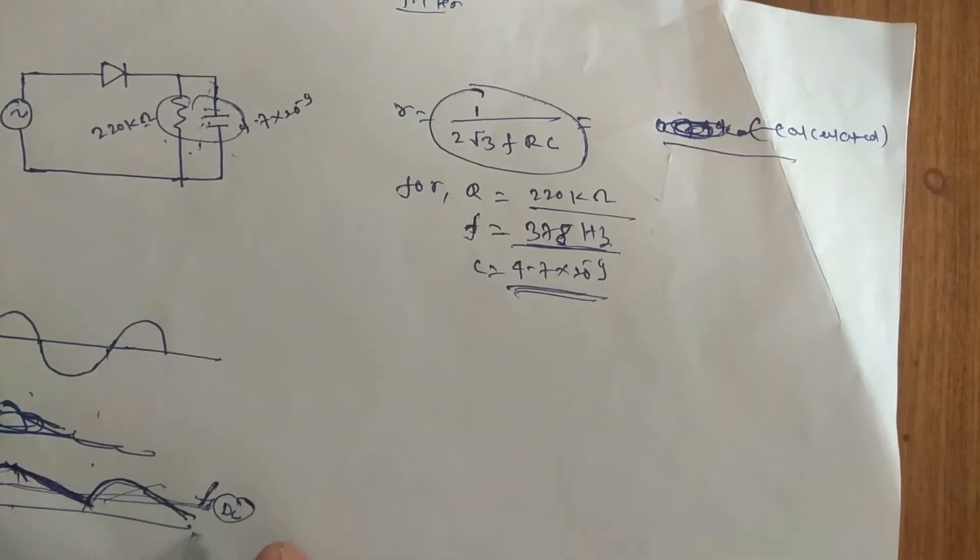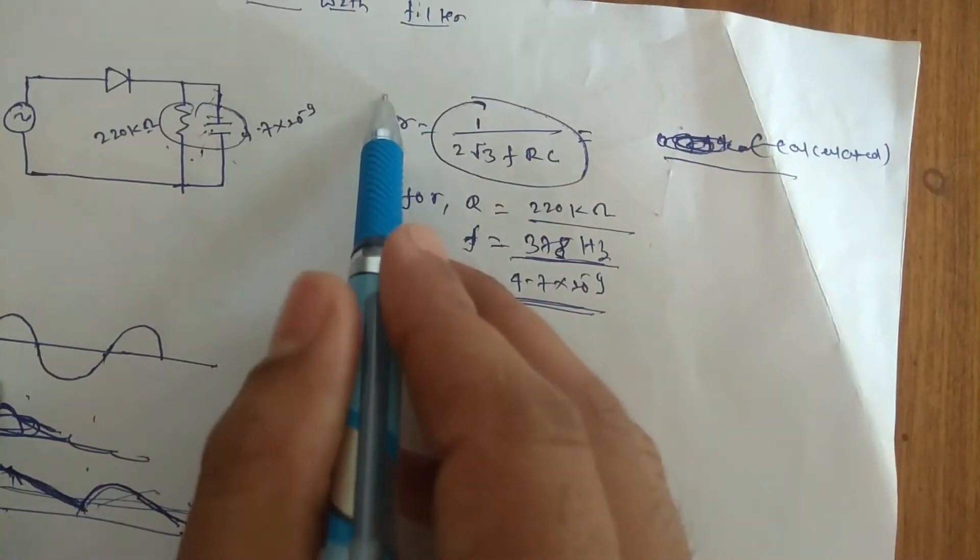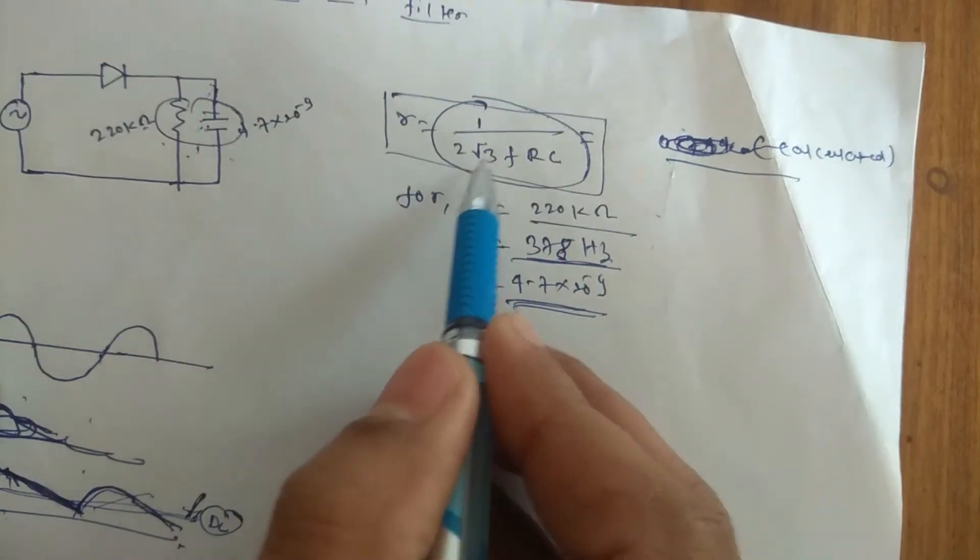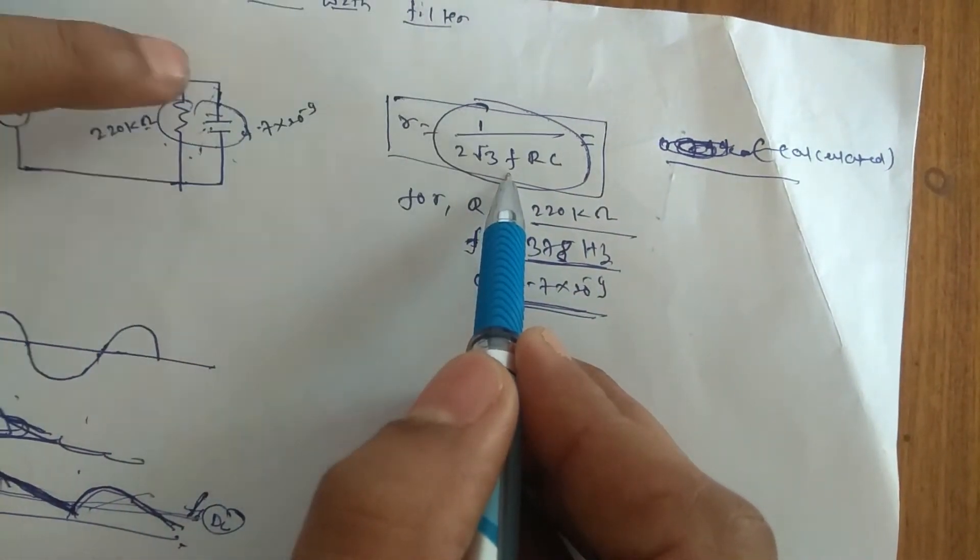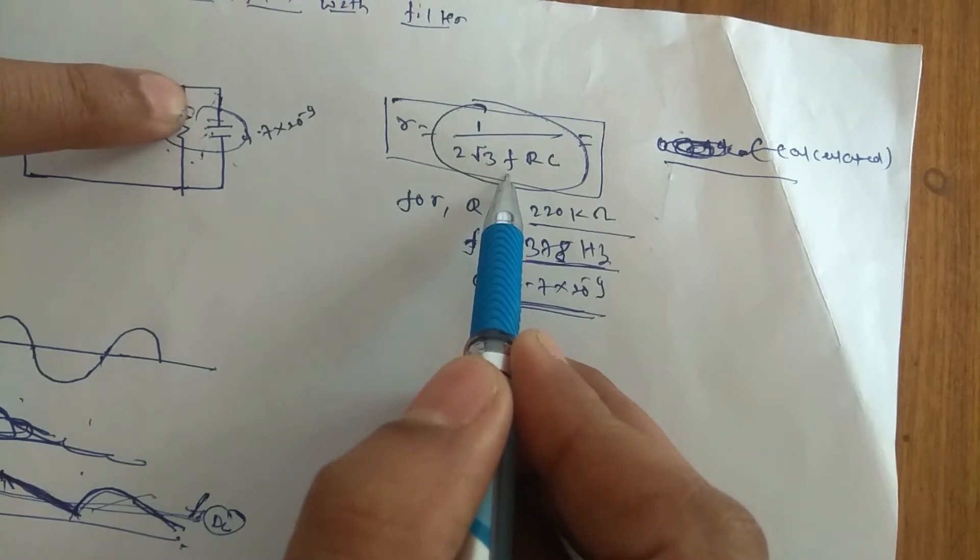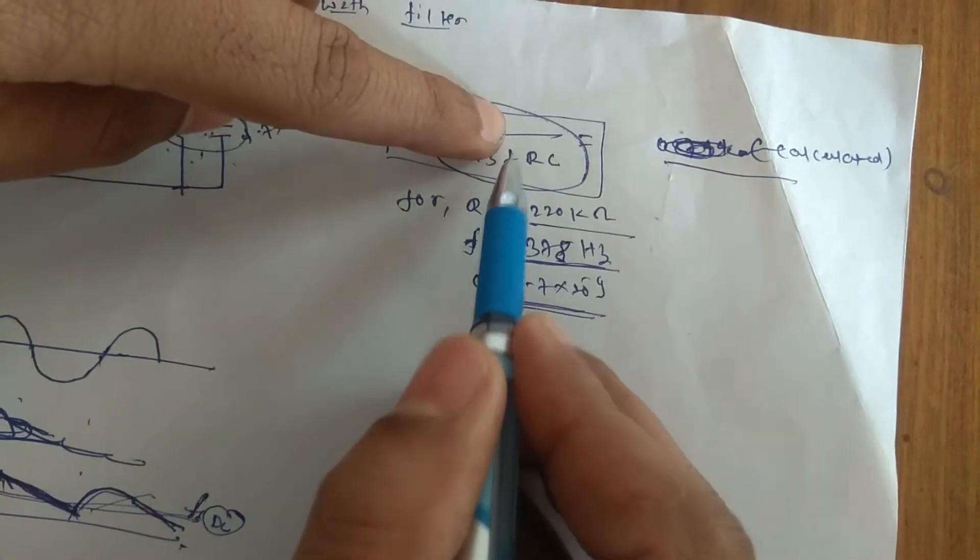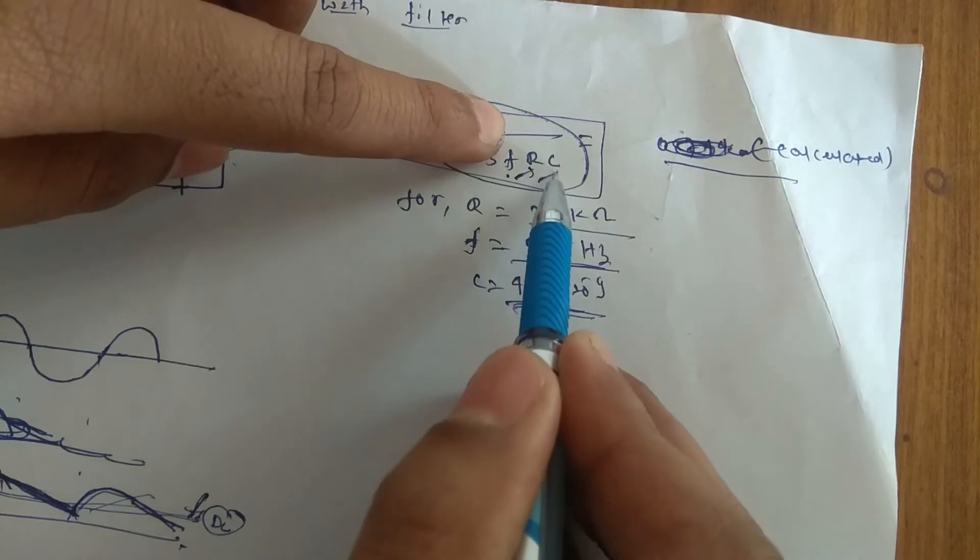Now if you see with this effect, the calculated value of ripple by the literature is 1 by root 2, root 3, FRC. After frequency that we are operating, because when capacitor has come into effect, we need to go with the frequency, and the R, and this C.